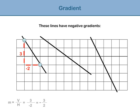Let's look at a second example. In this case, V equals 2 and H equals negative 3. Again, H is negative because we are counting the squares from right to left. M equals V divided by H. M equals negative 2 over 3, or negative 2 thirds.